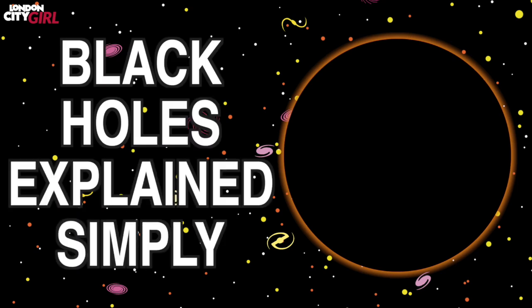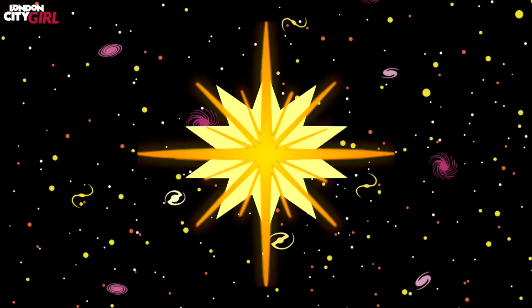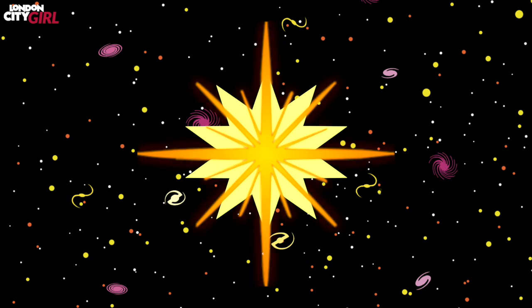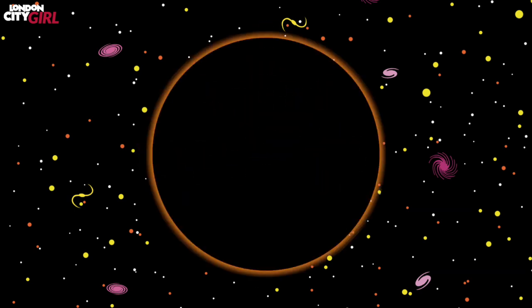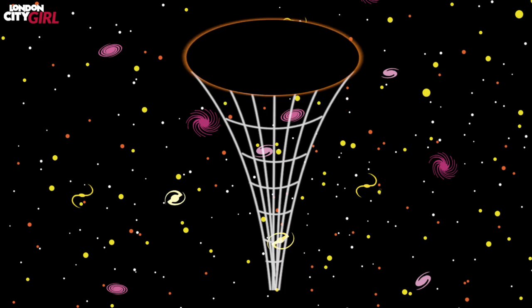Black holes explained simply. A black hole is formed when a sufficiently large star runs out of fuel and then collapses under its own gravity into a single point containing all of its mass.